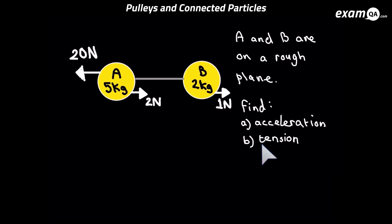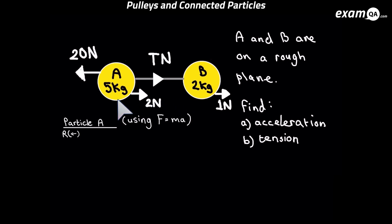The way we're going to do that is we're going to look at each particle one at a time and work out the forces on each particle. So let's start with particle A. If we're looking at particle A, we must put tension acting to the right. Tension is the force created by the rope.